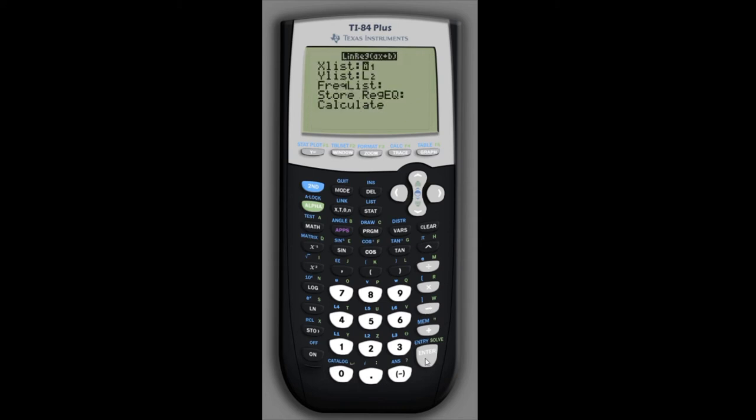If we select that we don't need to change anything here because we entered the x's in list one and the y's in list two, so nothing needs to be changed.